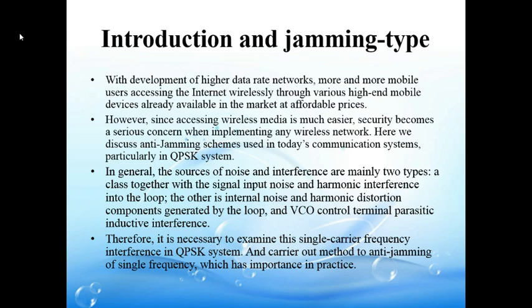For the jamming types: in normal QPSK communication systems, a receiver uses a phase-locked loop to extract a coherent carrier signal from a modulated signal. The phase-locked loop needs to be synchronized to the denominator carrier frequency to achieve this purpose. No matter what the rule of work in the phase-locked loop, applications are inevitably affected by noise and interference.